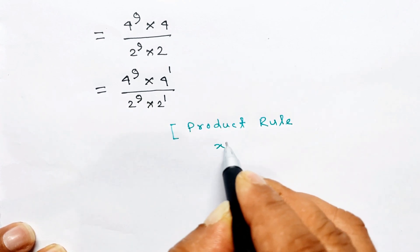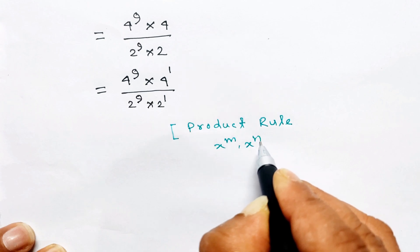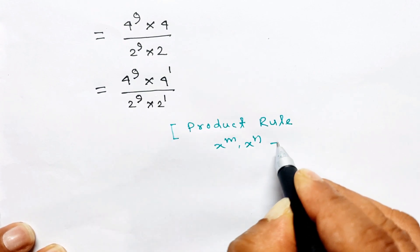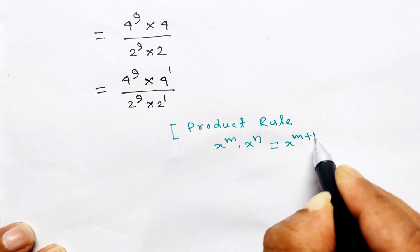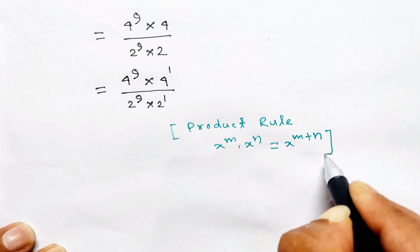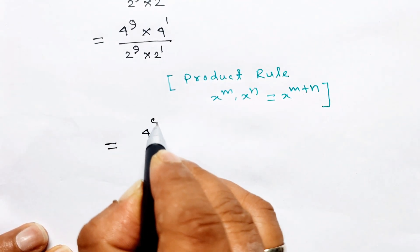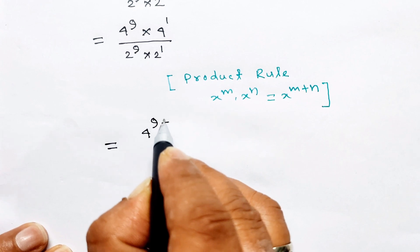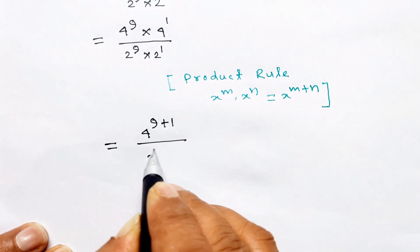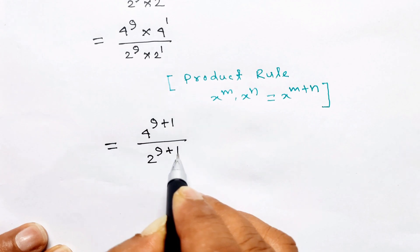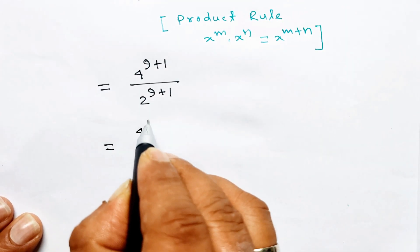x to the power m into x to the power n equals x to the power m plus n. Therefore this equals 4 to the power 9 plus 1, divided by 2 to the power 9 plus 1.